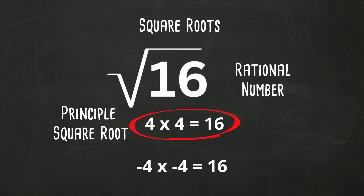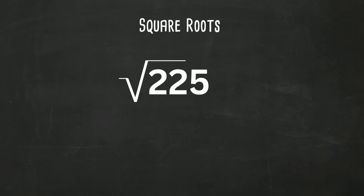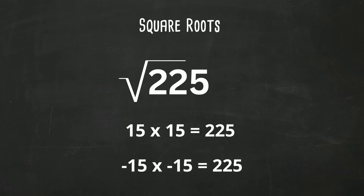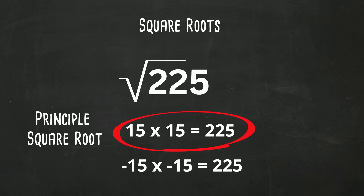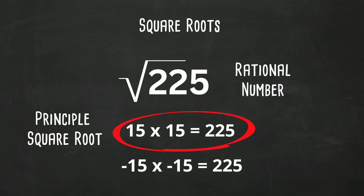Now let's take a look at the square root of 225. 15 times 15 is 225, so it's a perfect square. Also, negative 15 times negative 15 is 225. The positive version is the principal square root, and it's a rational number.